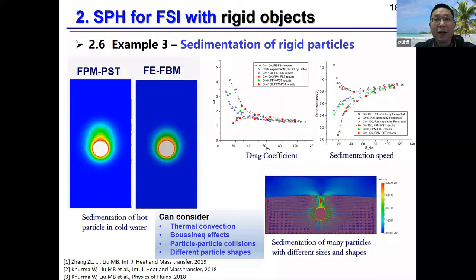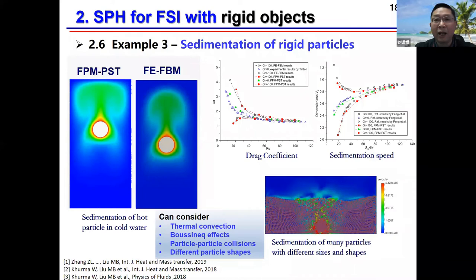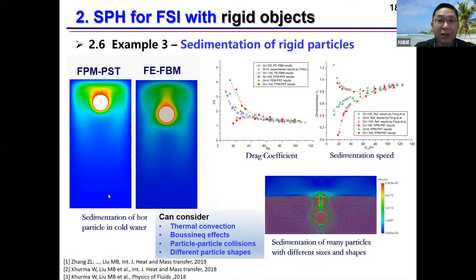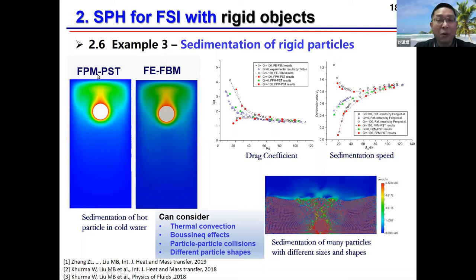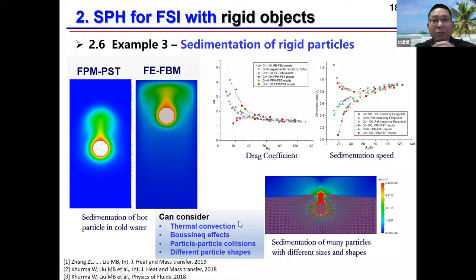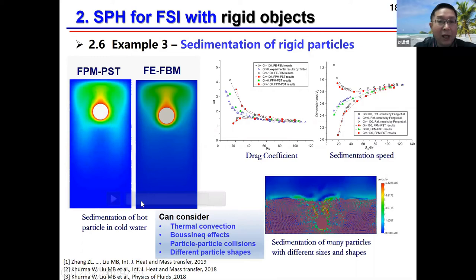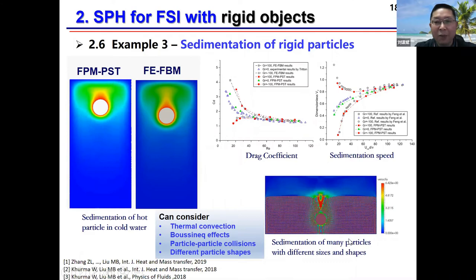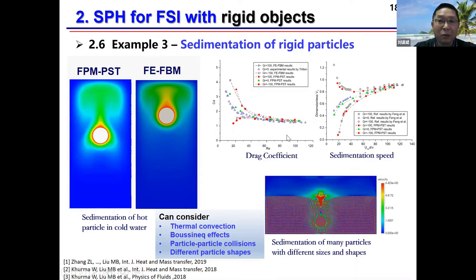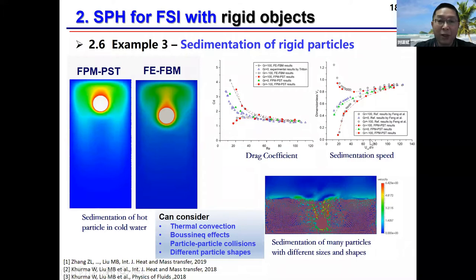The second example is oil spill containment with an oil boom in a two-dimensional numerical wave tank. This movie shows the oil spill containment process using the developed FPM integrated with PST. The model can reproduce different behaviors of the oil boom and obtain the interaction mechanism of the oil boom with water, oil, and the current environment. The third example is the sedimentation of rigid particles, which is important in ocean engineering and environmental engineering. Our model considers Marangoni convection, Coriolis effects, particle-particle collision, and different particle shapes, and the obtained drag coefficients and sedimentation speeds agree well with experimental results.